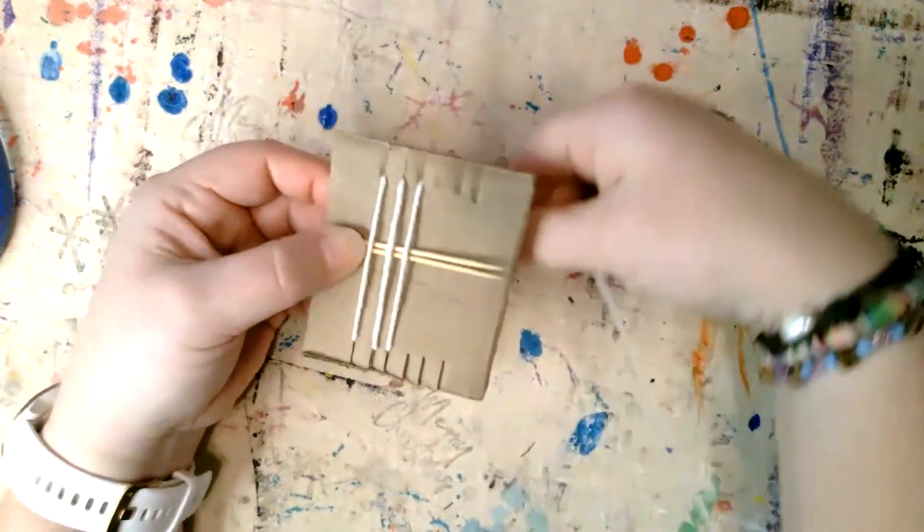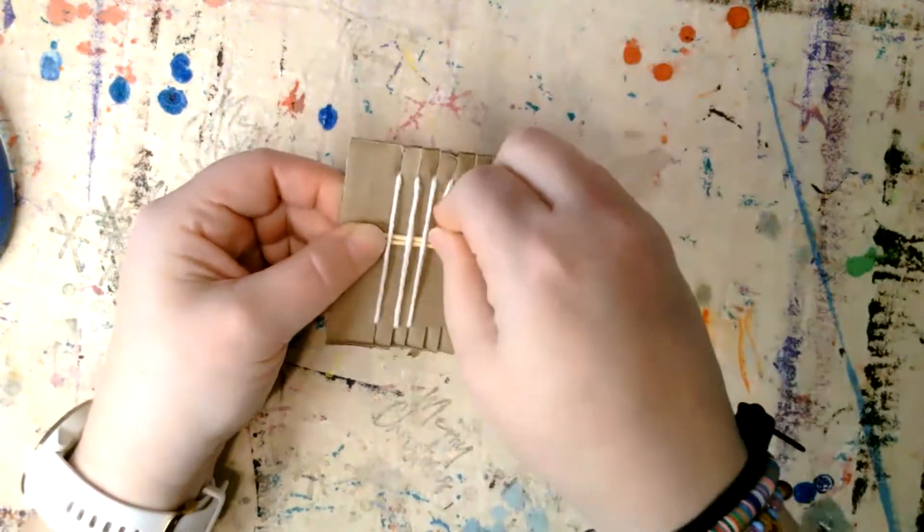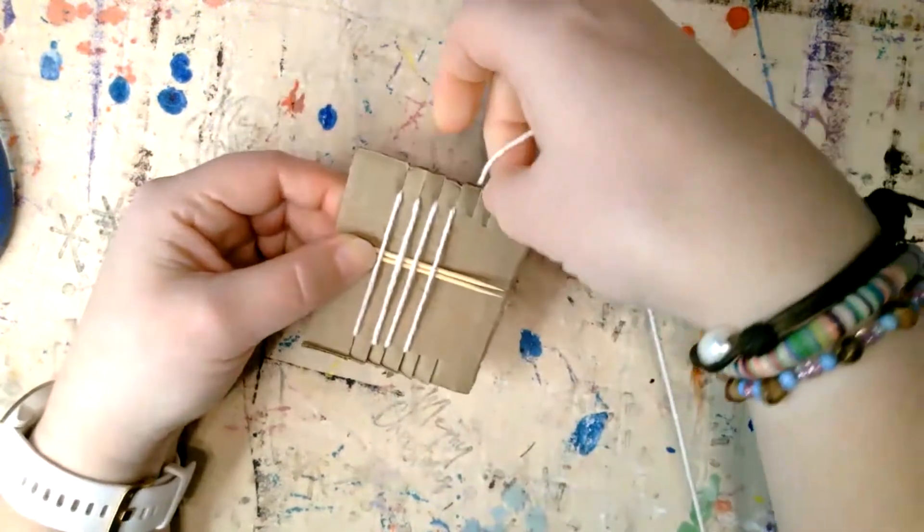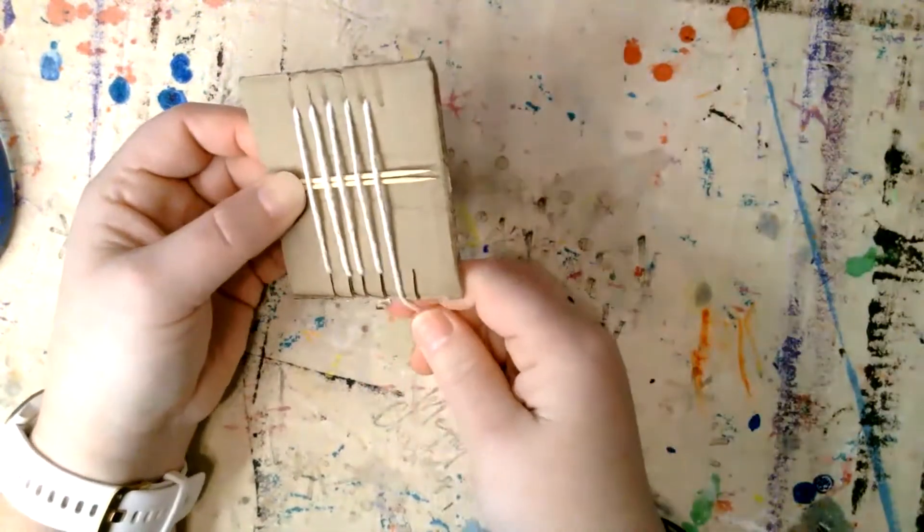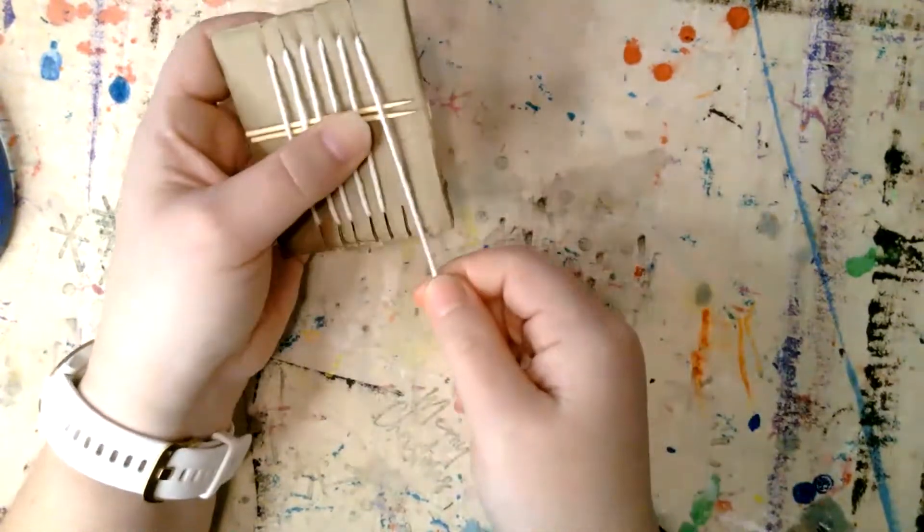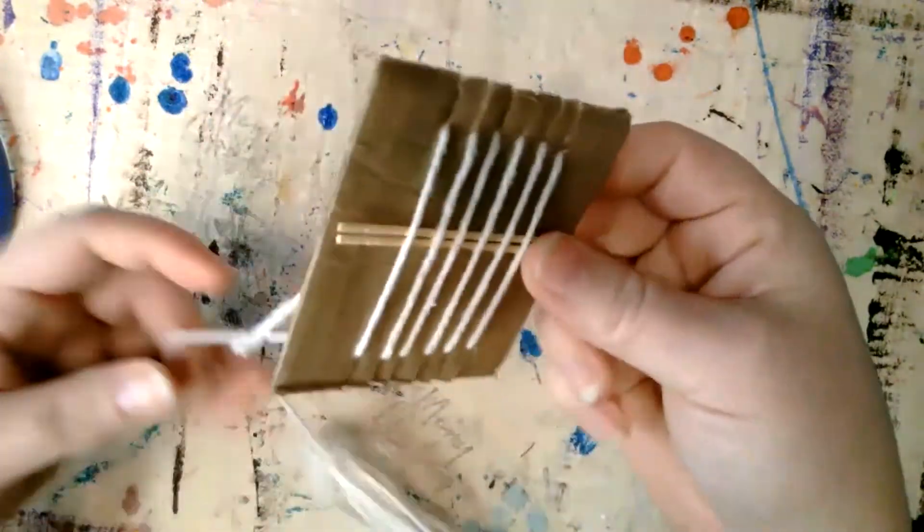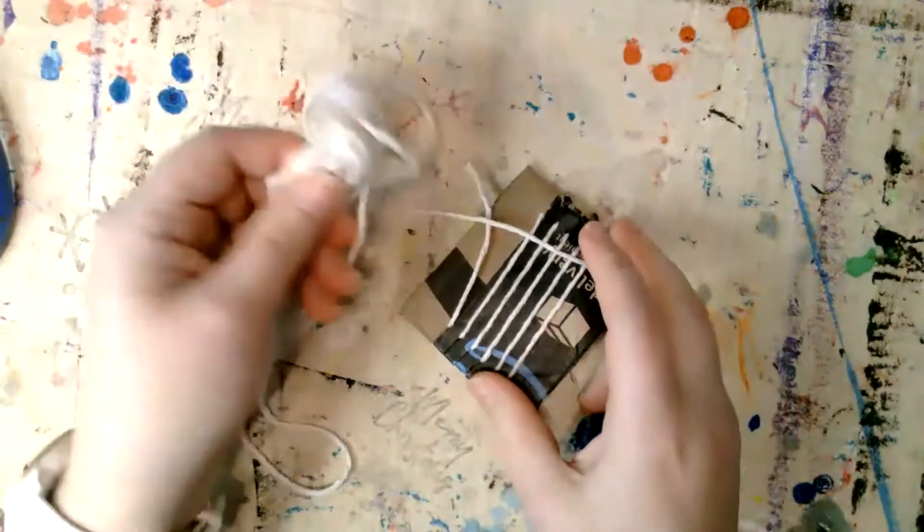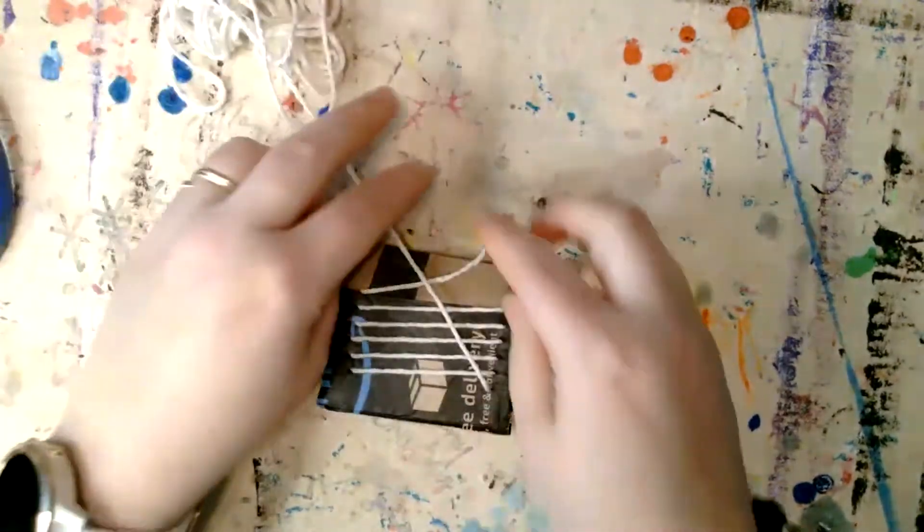You're going to come up the back into the next slot and then down, then come up the back into the slot and down. Just do that until you get to the other side. Once you get a couple of these done, you don't have to hold the toothpicks. I'm going to flip it over and leave all this mess here.